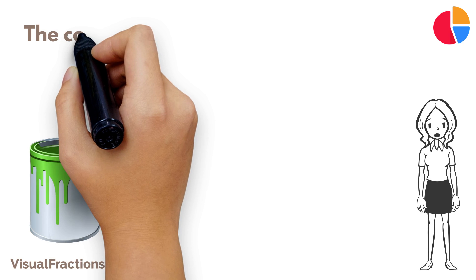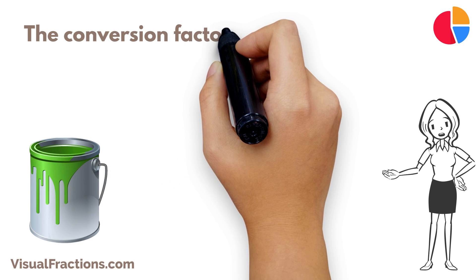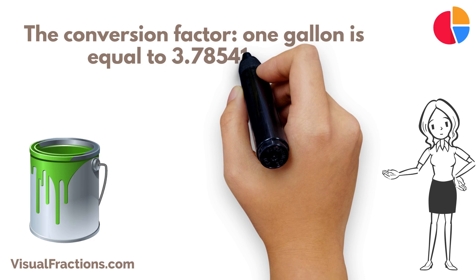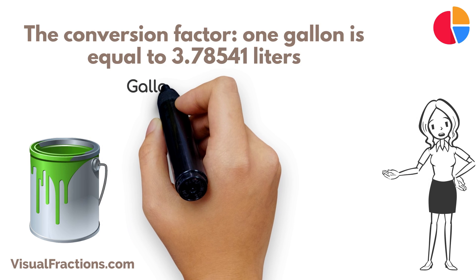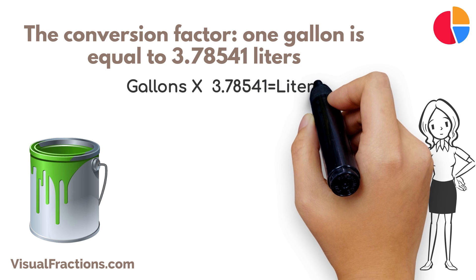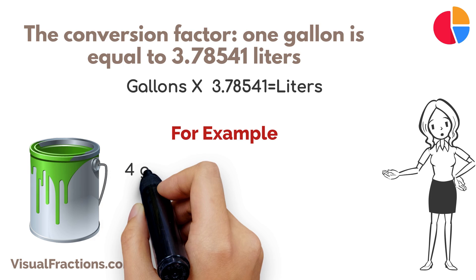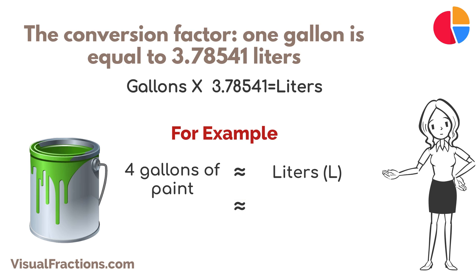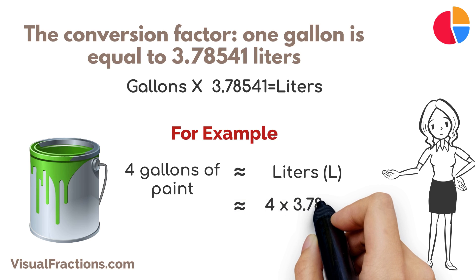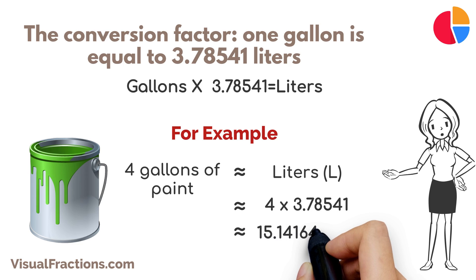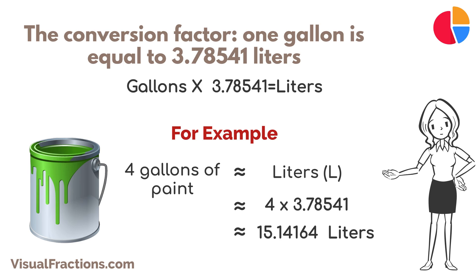First, let's recall the conversion factor: one gallon is approximately equal to 3.78541 liters. To convert gallons to liters, simply multiply the number of gallons by this conversion factor. For instance, imagine you have four gallons of paint to convert to liters. By multiplying 4 by 3.78541, you'll get approximately 15.14164 liters. That's it — your four gallons of paint equals approximately 15.14164 liters.